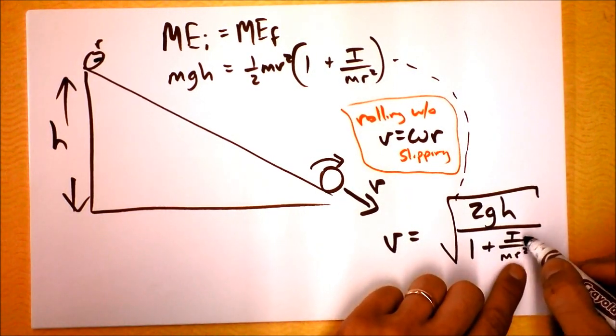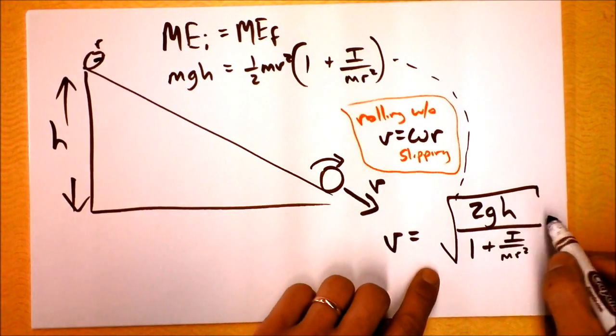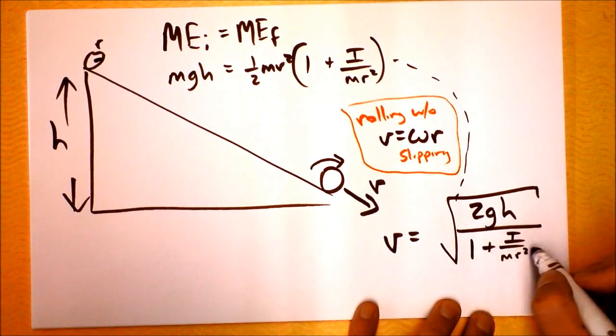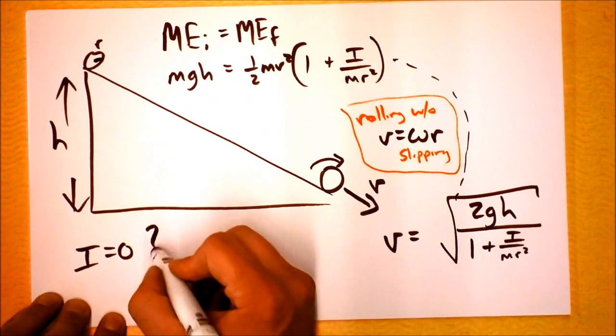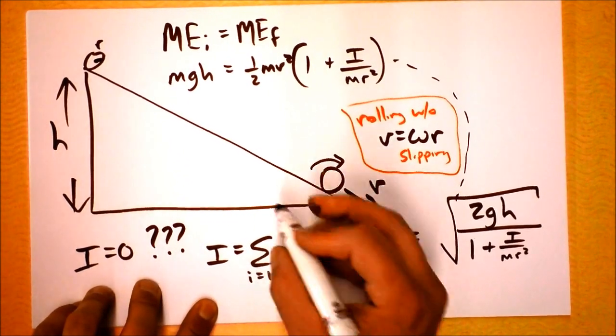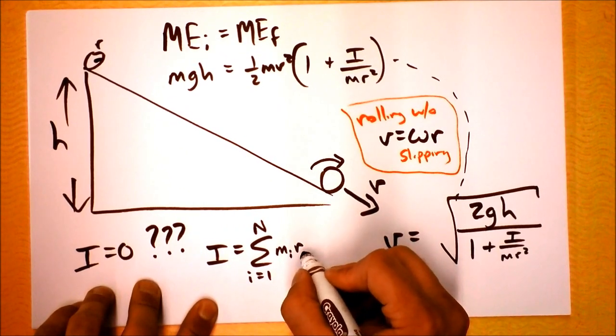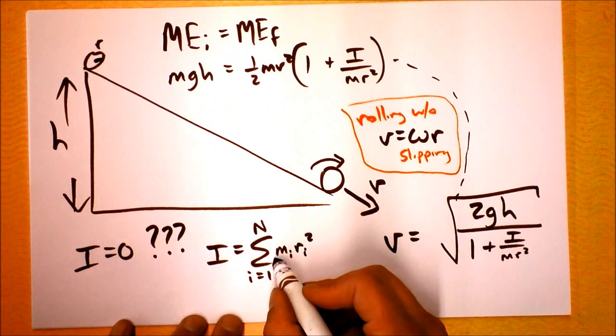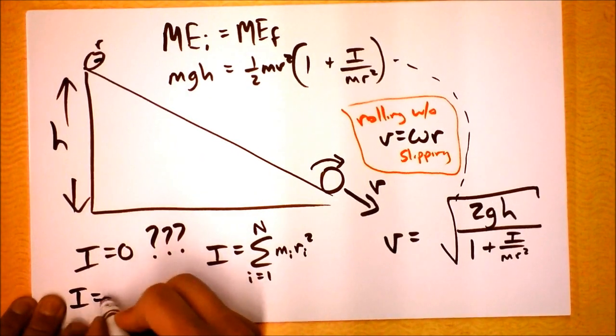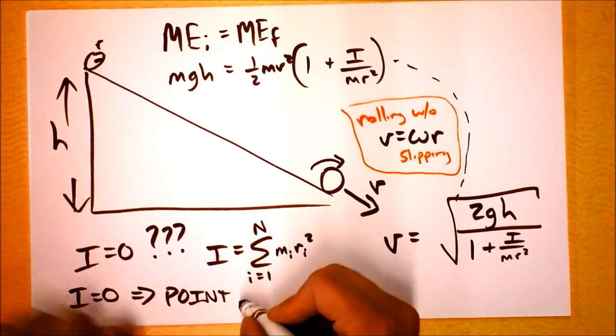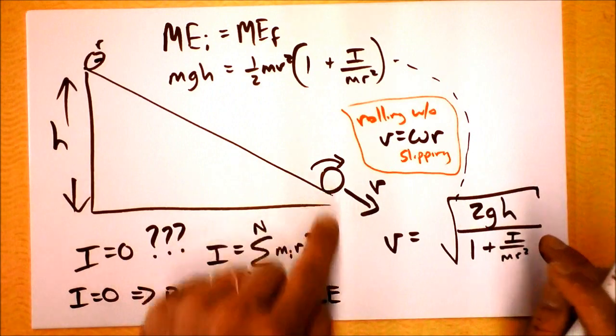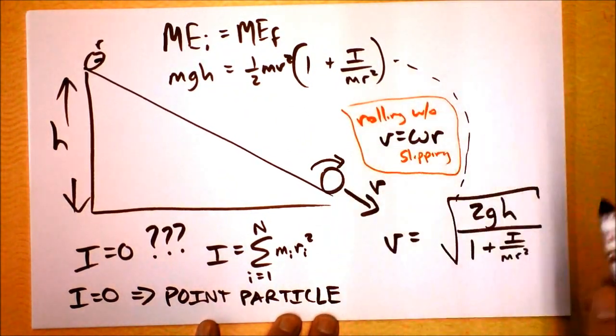So here's the thing. It depends on the moment of inertia whether this is going to be just the standard root 2GH. So how could we get this to be root 2GH? Well, if I were 0, then this would be root 2GH over 1, and then we'd have root 2GH. What does it mean? I equals 0 means what? If I starts from thing 1 to thing n, and it's going to be a mass of each thing times the distance of each thing from the center, if this is 0, either we've got no mass or we've got no radius. So something with a radius of 0 would be a point particle. I equals 0 implies point particle. And until today, that's all we've ever considered, rolling down a hill, because all the energy is translational when it gets to the bottom of the hill.